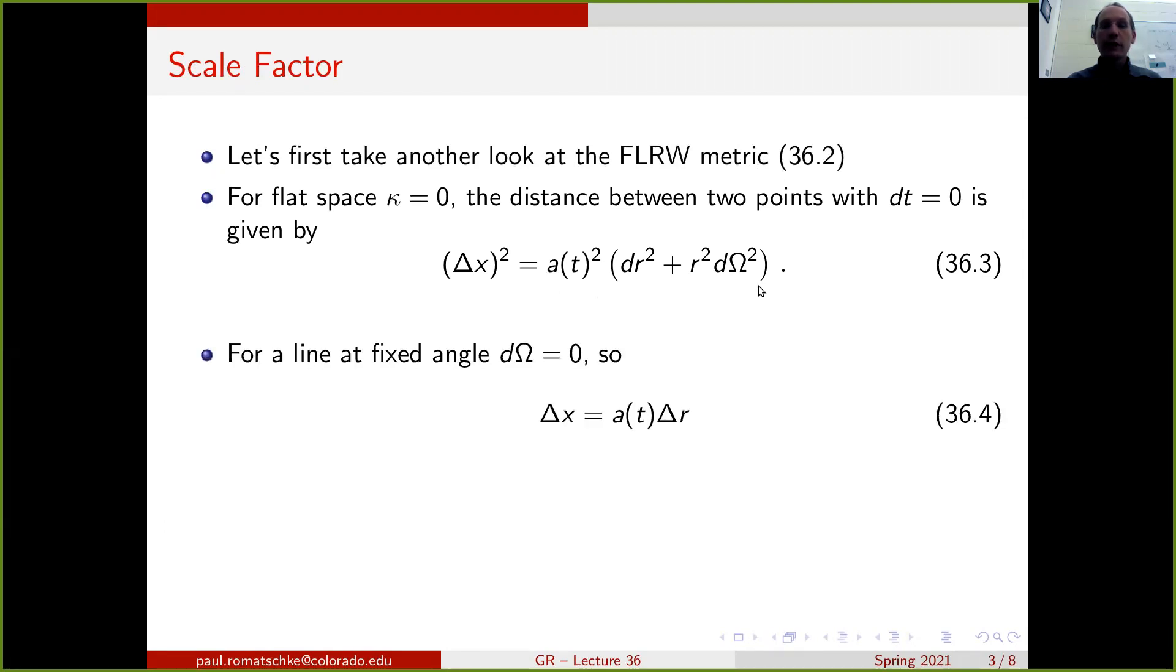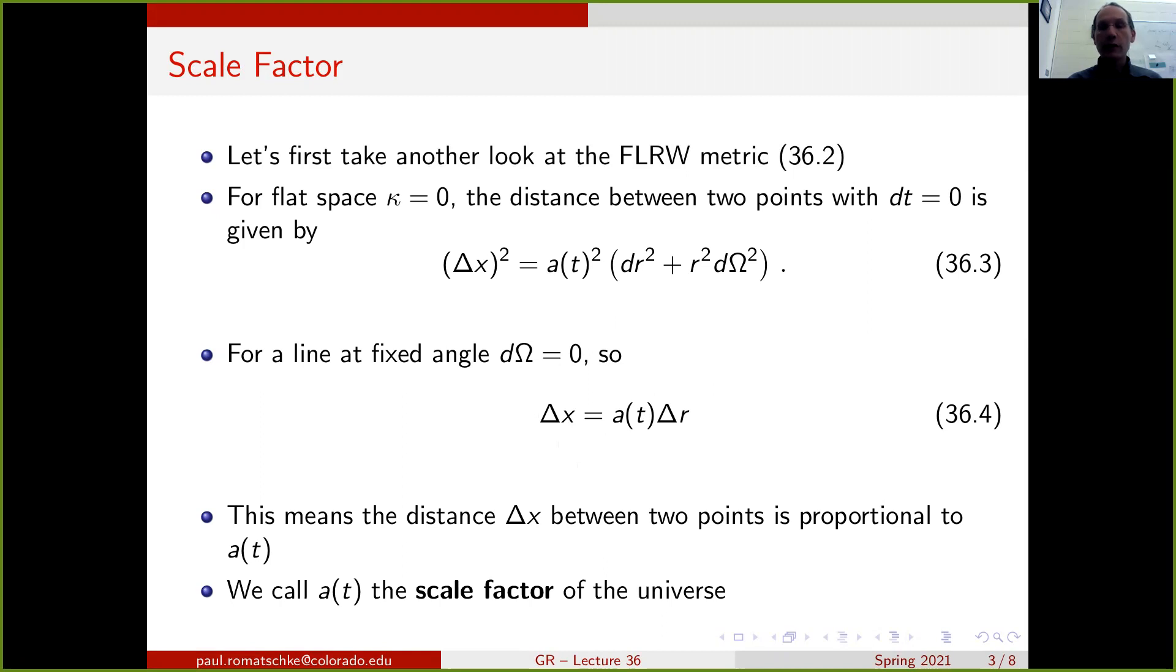If we take the root out of this and we also say that we want to consider fixed angles so d omega is 0, then the distance between two points delta x is equal to the distance delta r times a(t). And this means that the distance between two points is proportional to this factor a(t). For this reason, we call a(t) the scale factor of the universe. The larger a(t), the larger the universe is, and the smaller a(t), the smaller the universe is.